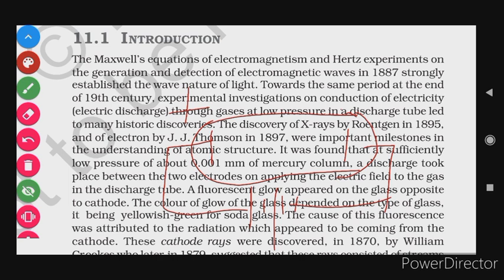In the discharge tube, the positive electrode is the anode and the negative electrode is the cathode. On this side, we apply a fluorescent material like ZnS. Fluorescent materials are those on which charged particles fall and produce scintillation. At low pressure with high voltage applied, the fluorescent material produces scintillation.